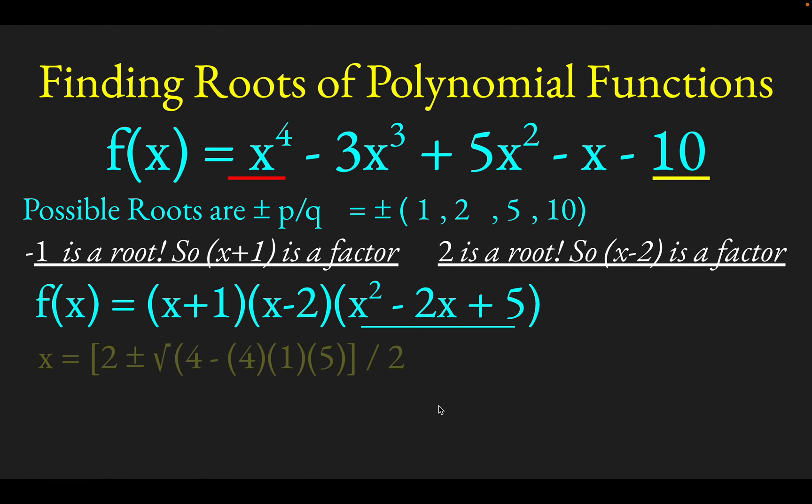This fourth order polynomial can be written as these two factors times this quadratic. If we can just solve this quadratic, we'll be done. I'm just going to use the quadratic formula this time. So negative b, which would be positive 2, plus or minus root, well, b squared is going to be 4, and then minus 4ac, minus 4 times 1, which is the coefficient of your x squared, and then times c, which would be 5 here, and then all over 2a, or all over 2 times 1. And if you simplify this a bit, you'll get 2 plus or minus root negative 16 over 2.